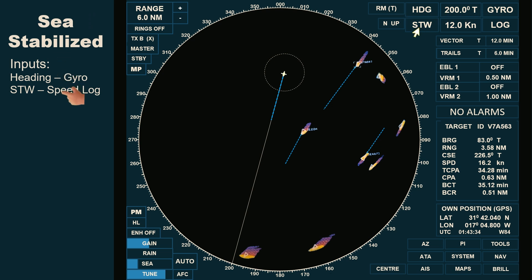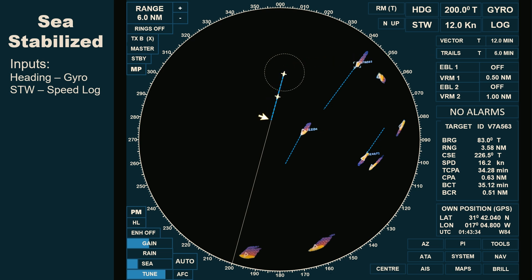The speed is measured through the water by the Doppler speed log, which is 12 knots. The radar is displaying true vectors, as indicated by the letter T. If it is displaying relative vectors, you would see the letter R instead. The vector time is set to 12 minutes, which means that after 12 minutes, own ship's position will be at the end of her vector.